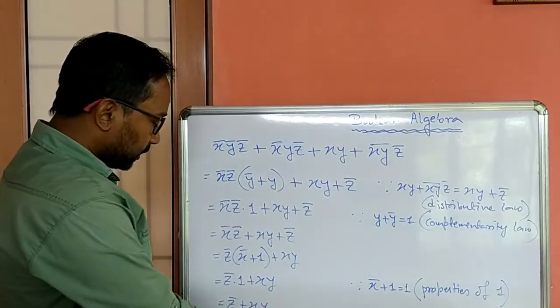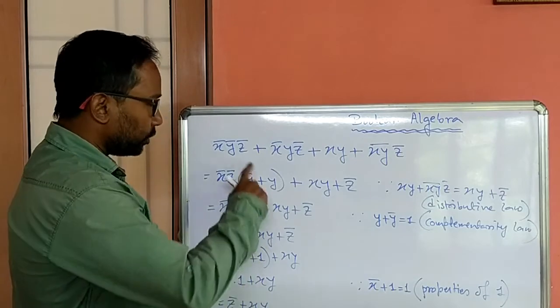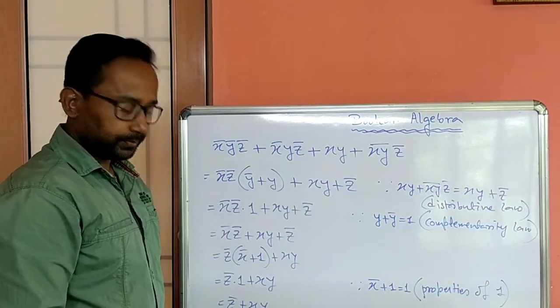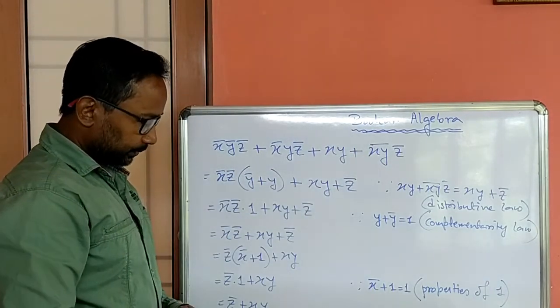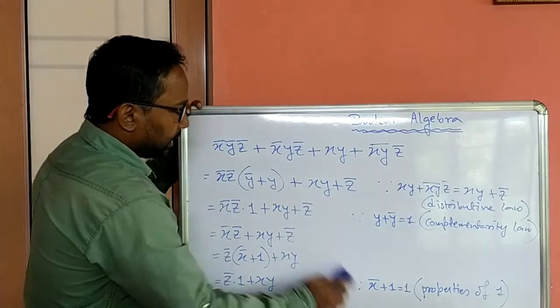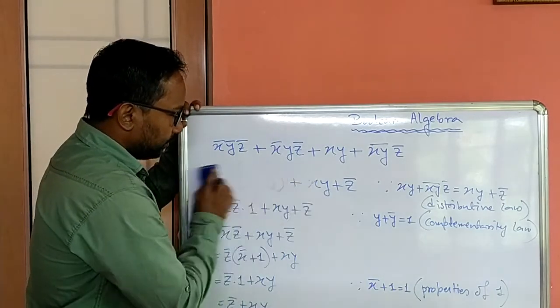Now ultimately we are getting z not plus xy, or we can write xy plus z not. So this is the simplified expression of this boolean expression. Clear? Now let's take another example.